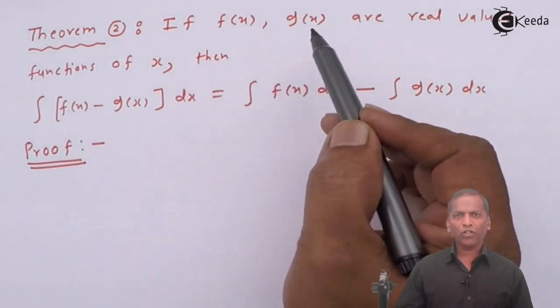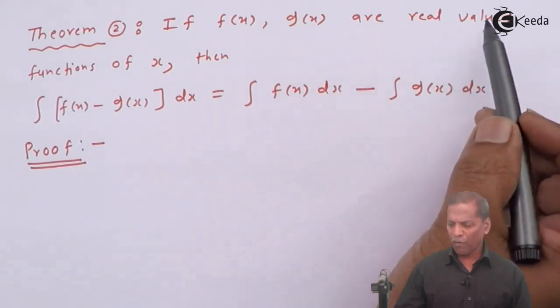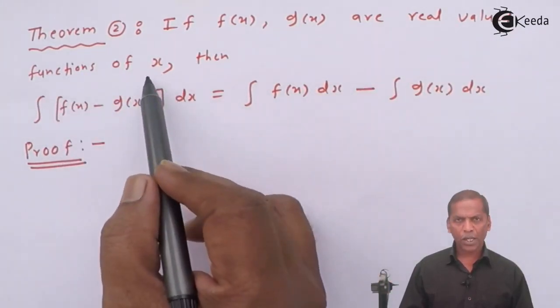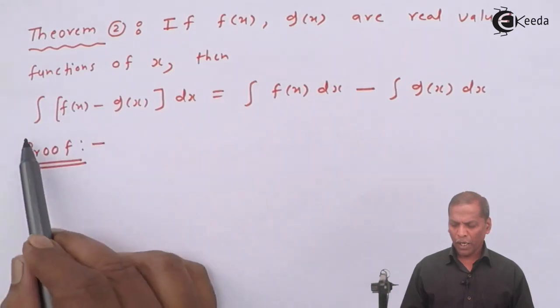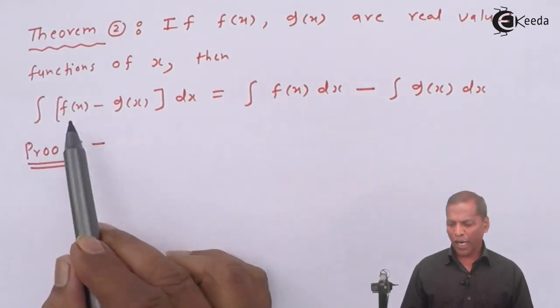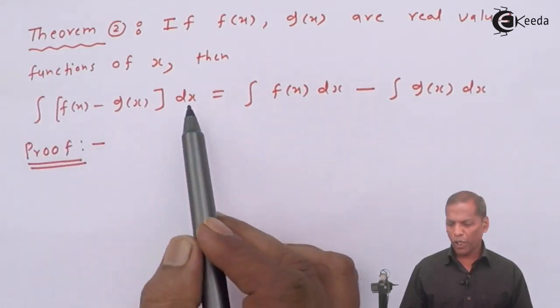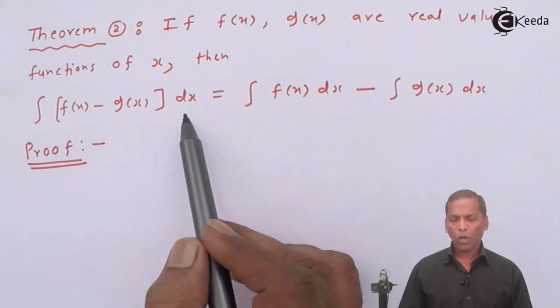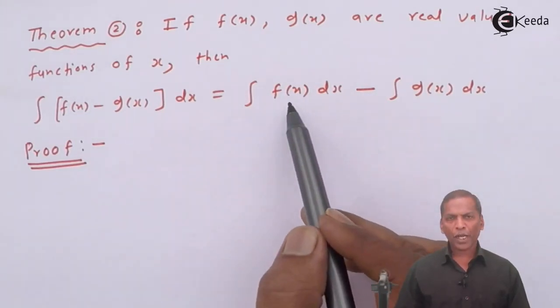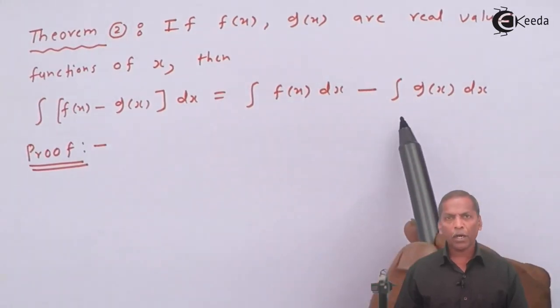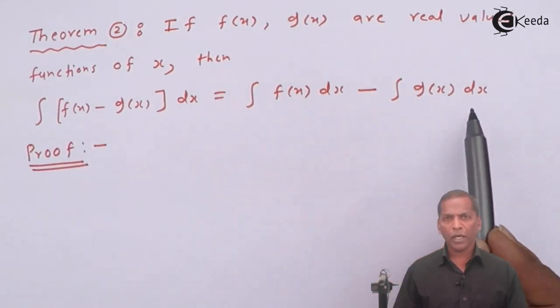Theorem number 2 is: if f(x) and g(x) are real valued functions of x, then integral of [f(x) - g(x)] dx is equal to integral f(x) dx minus integral g(x) dx.